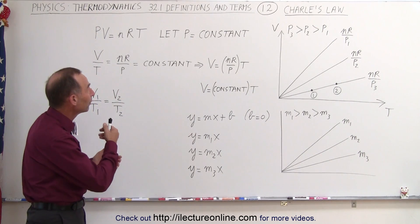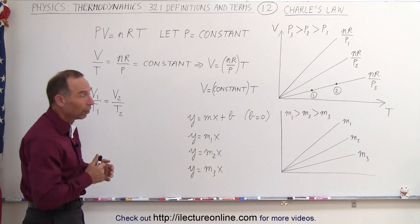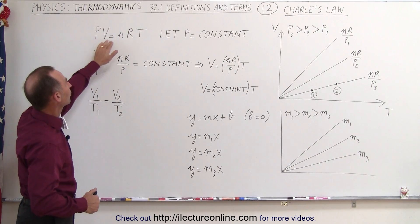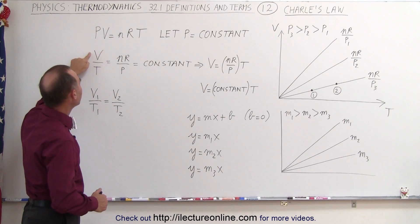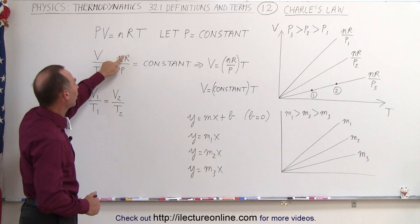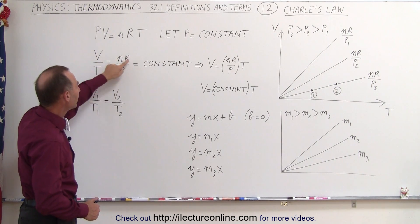Charles' Law is the law where the pressure remains constant so that the ideal gas equation PV equals NRT can now be written as V divided by T equals NR over P, this then being a constant.